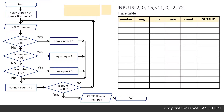Here we can see a list of inputs. These will be given to you on the exam question. This is the data that's going to feed into the flowchart and we'll work our way through — hopefully it'll all make sense as we go through this example together.